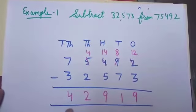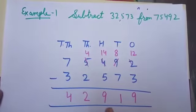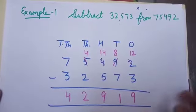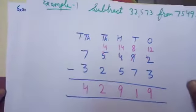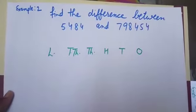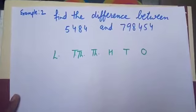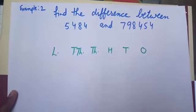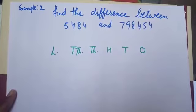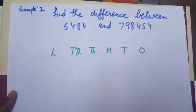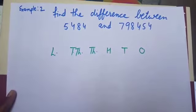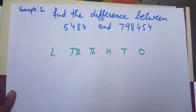Then the answer is 42,919. Let us take second example. Find the difference between 5,484 and 7,98,454. When I start solving this question, firstly, I will write the greater number.